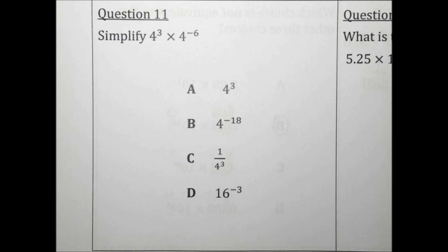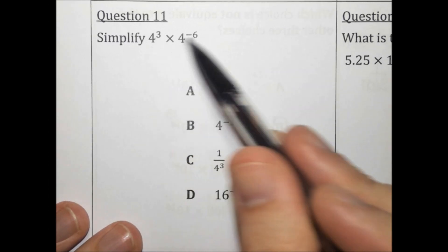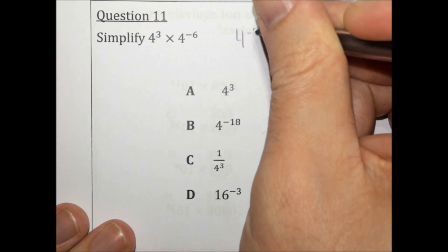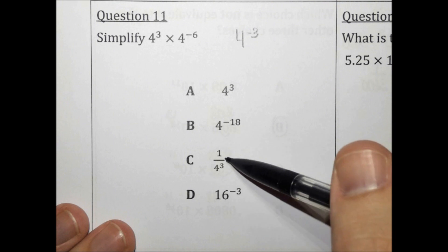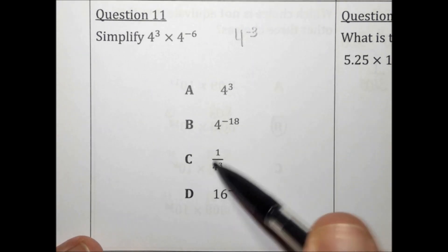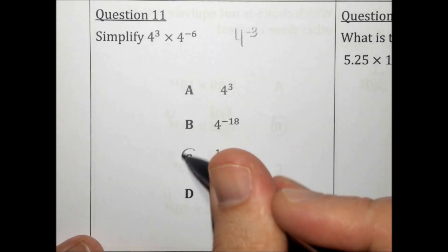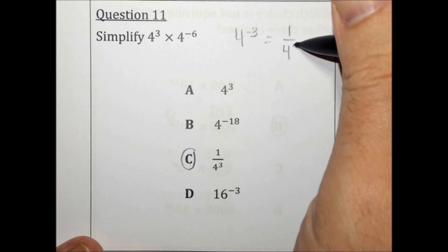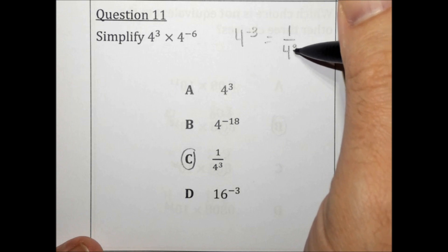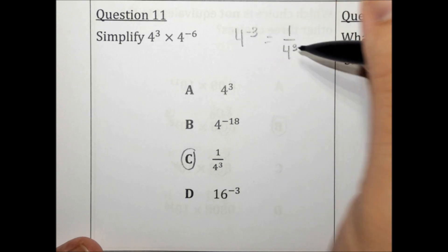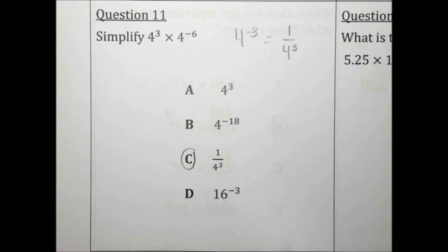Simplify 4 to the third times 4 to the negative 6. When you multiply, you add the exponents. So when we add 3 and negative 6, we get negative 3. None of these choices say 4 to the negative third, but choice C is equivalent. When you have a negative exponent, you can rewrite it without the negative exponent as long as you put the same expression in the denominator. So the answer is C.